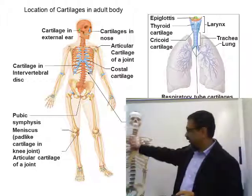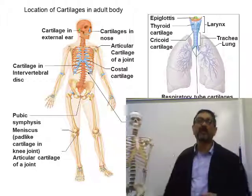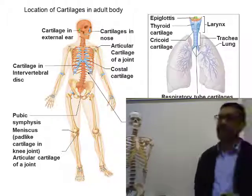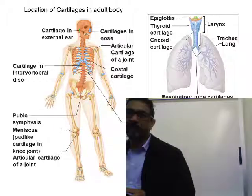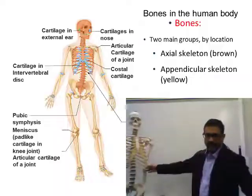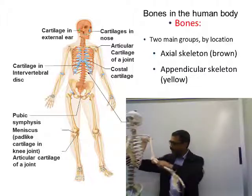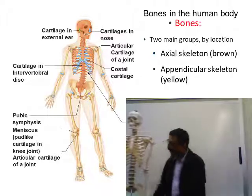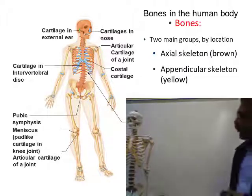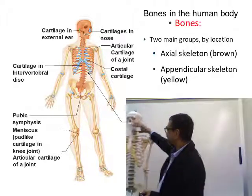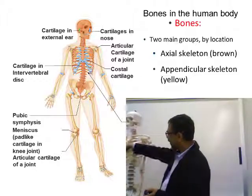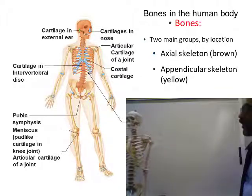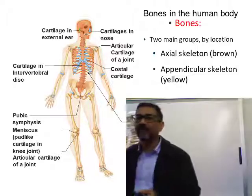The bones of the skeleton are divided into two groups: appendicular skeleton — the bones of the upper and lower extremities — and axial skeleton, which includes the bones of the skull, the thoracic cage, and the vertebral column. Those are the axial bones of your body.